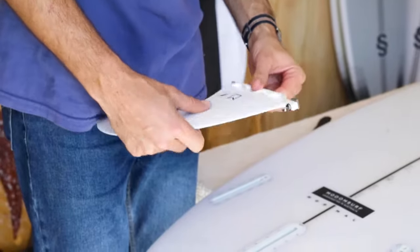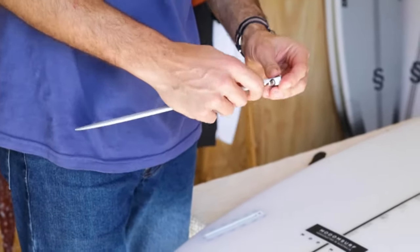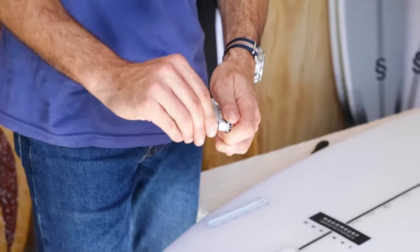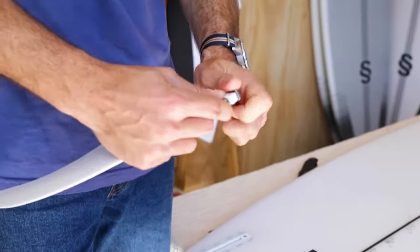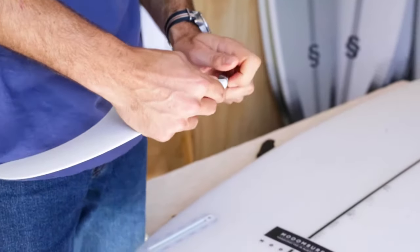This is a quick look at how to put a single fin into your box. You have the plate on the back of the fin, so grab the plate off the fin and slide that into the box.